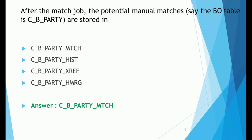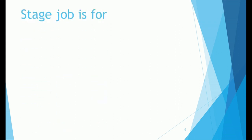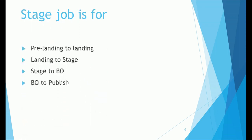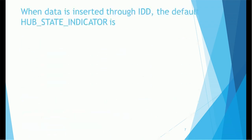Next question: the stage job is for — pre-landing to landing, landing to stage, stage to BO, or BO to publish? This is a very simple question and the correct answer is landing to stage. Next question: when data is inserted through IDD, the default hub state indicator value is 1 or -1? The correct answer is 1.